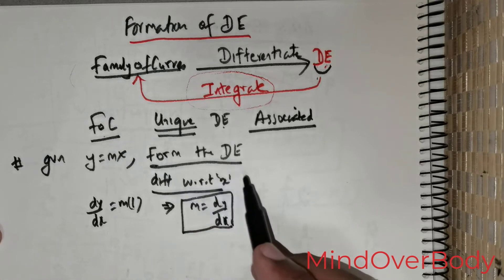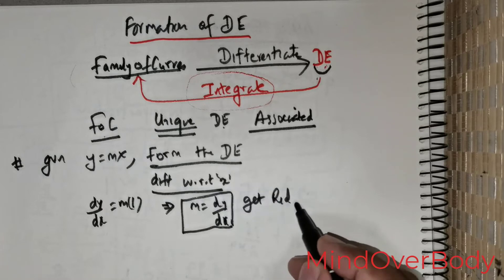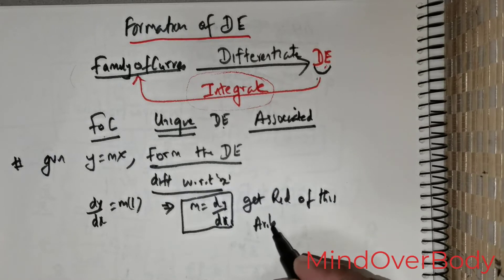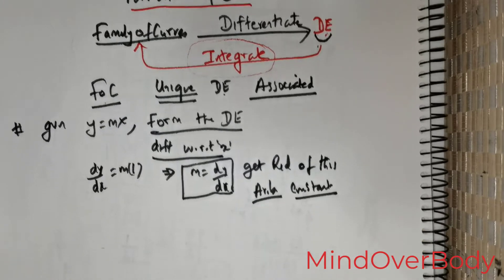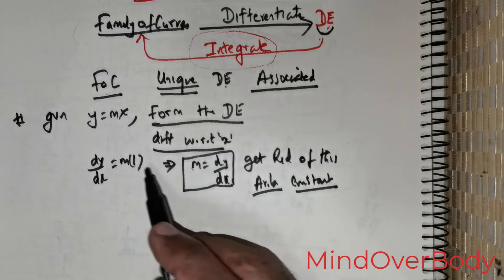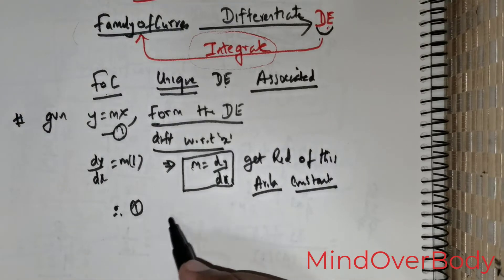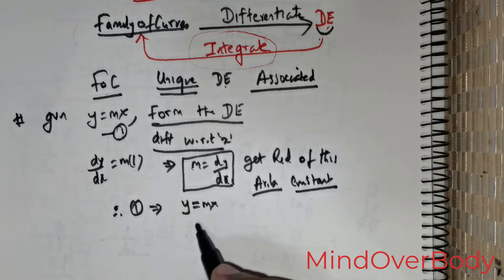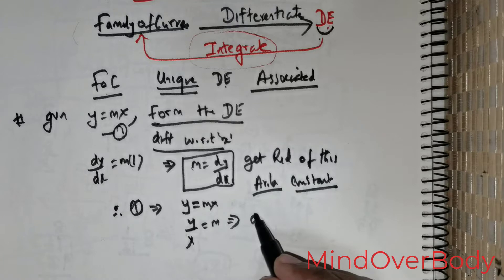Whenever you are asked to form the differential equation, you have to get rid of the arbitrary constant — that is the basic idea. Now I have m = dy/dx. From y = mx, I can rewrite this as y/x = m.